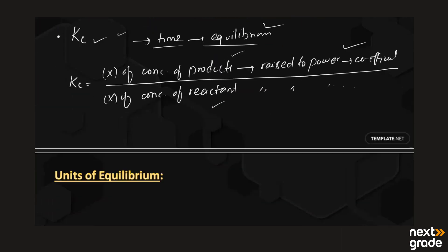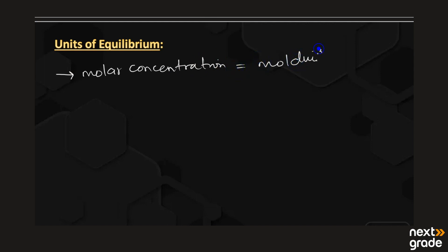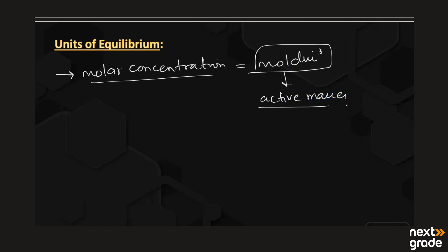Next, we consider the units for the equilibrium constant. Many chemical reactions have units because we use molar concentrations, which are taken in mole per dm³. These are known as molar concentrations and also as active masses. We can derive the unit of any chemical reaction by substituting the value of mole per dm³.